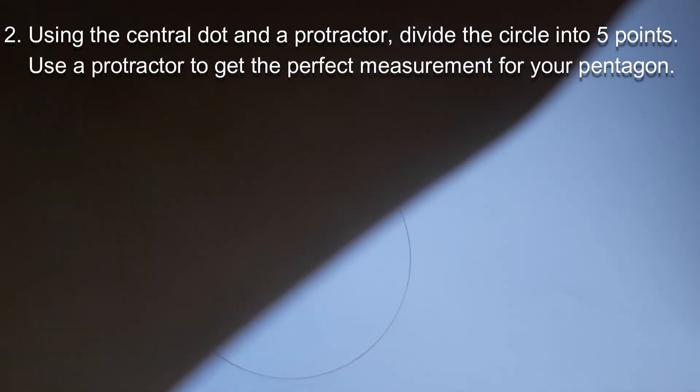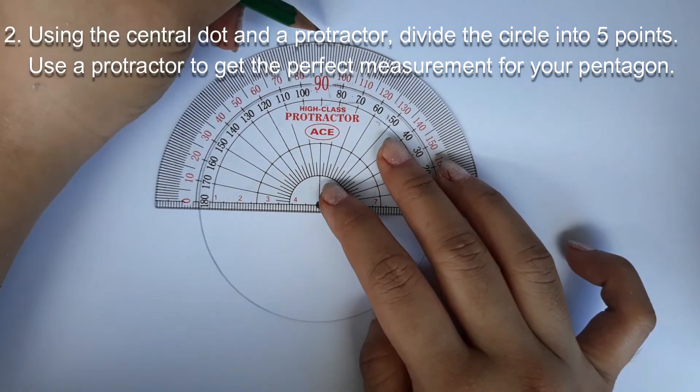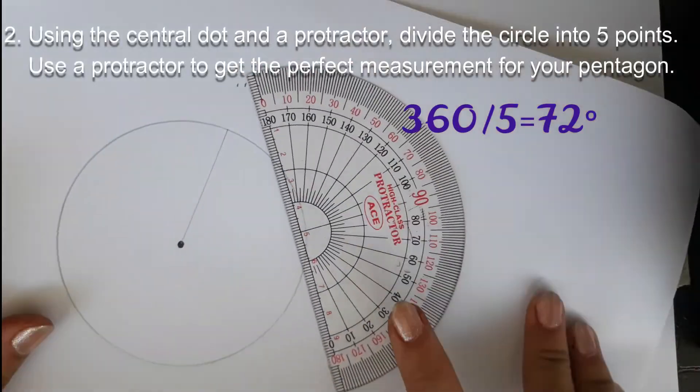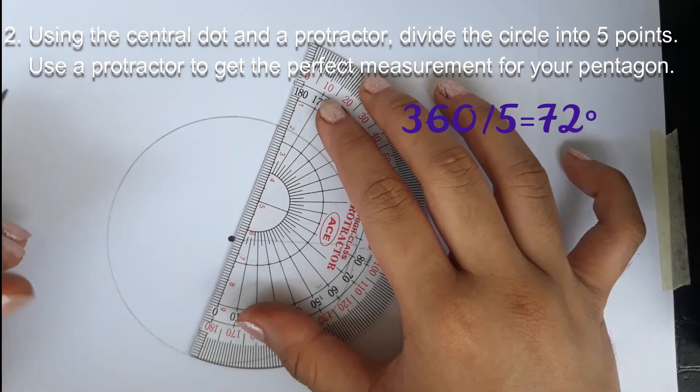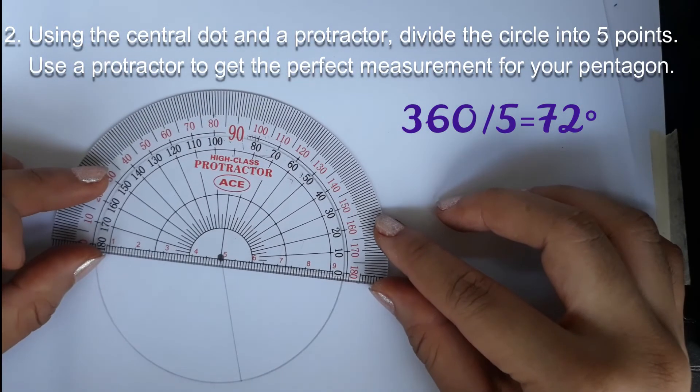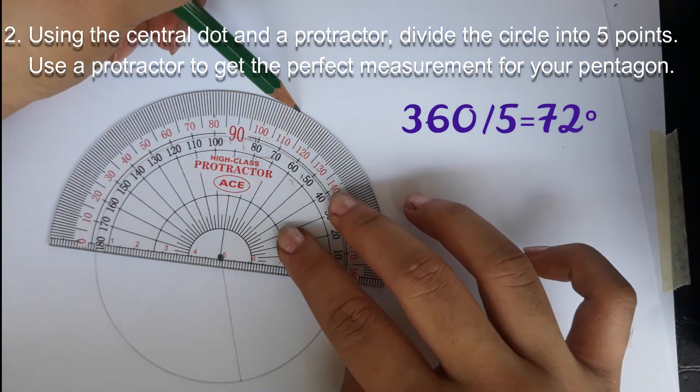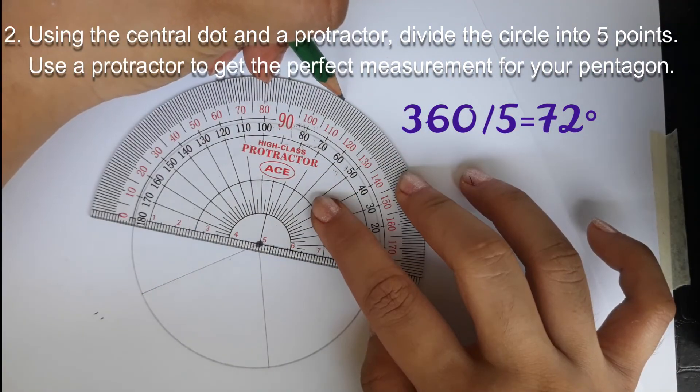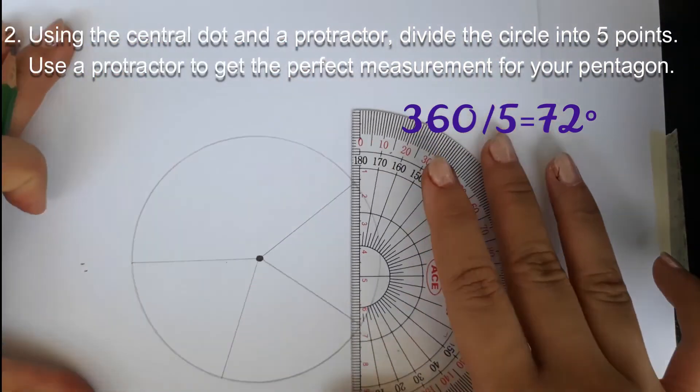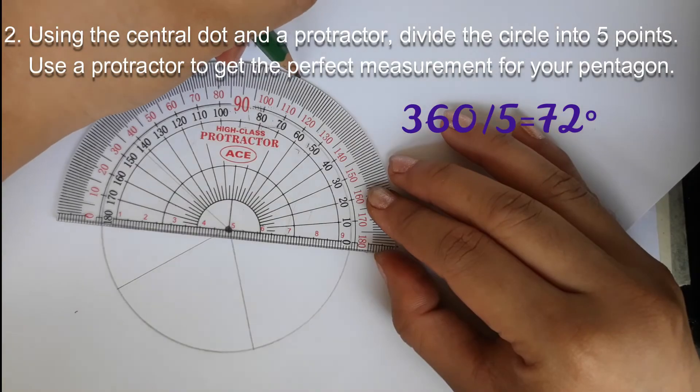Step 2. Using the central dot and the protractor, divide the circle into five points. There are 360 degrees in a circle, and 360 divided by 5 is equal to 72 degrees. So, you should mark a dot every 72 degrees. Use a protractor to get the perfect measurement for your pentagon.